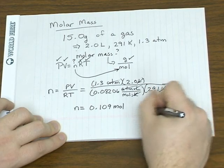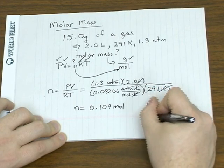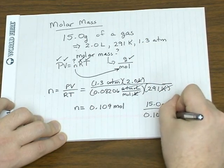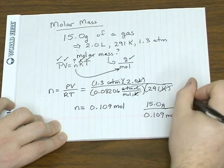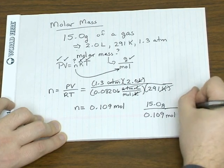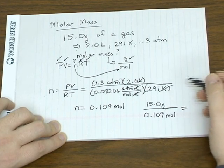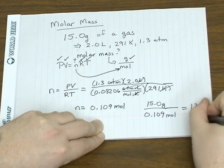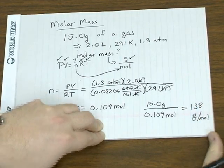So if the mass is 15 grams, and under those conditions we calculate that we have 0.109 moles of that gas, you divide the two and that gives you 138 grams per mole.